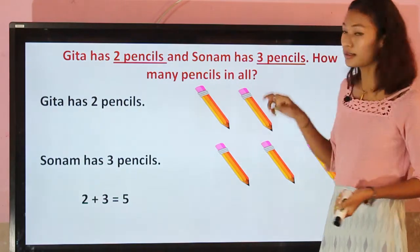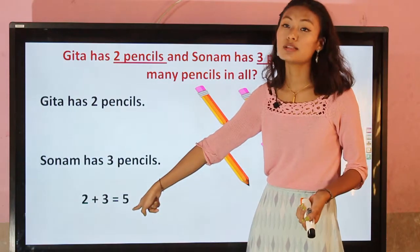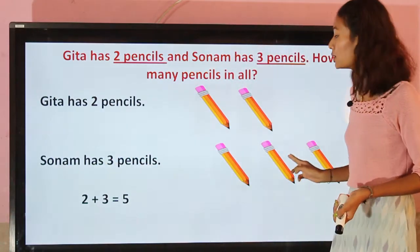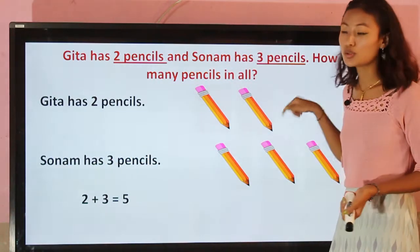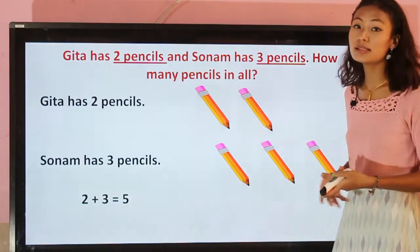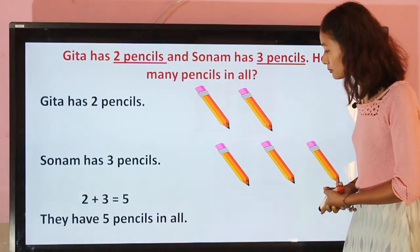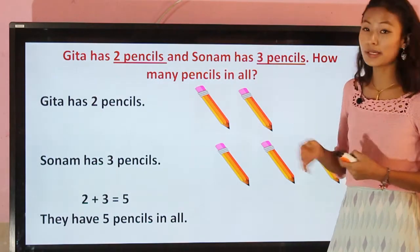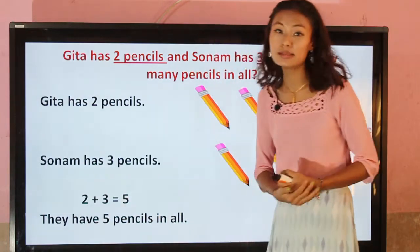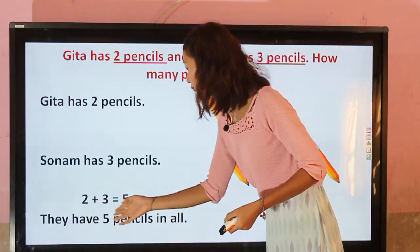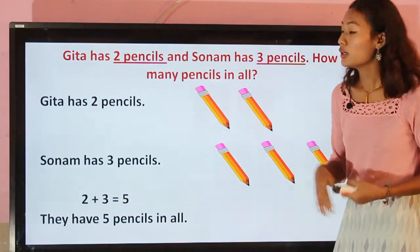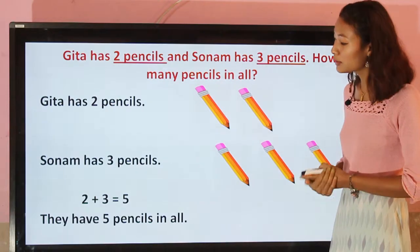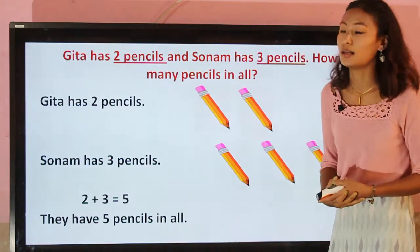Here you can see the answer is five. Gita has two pencils and Sonam has three pencils, so they have five pencils in all. We write: they have five pencils in all.